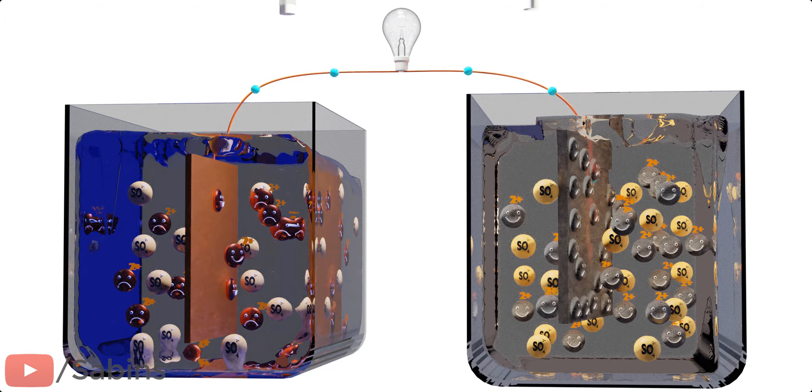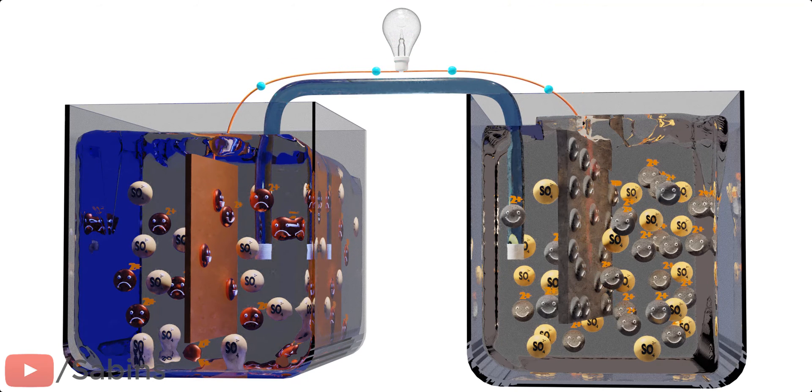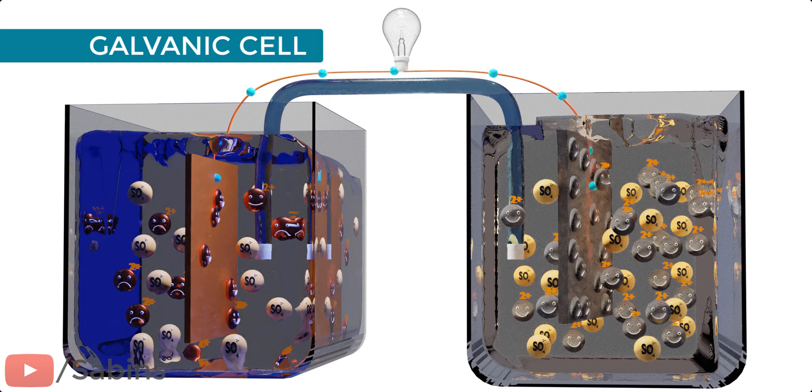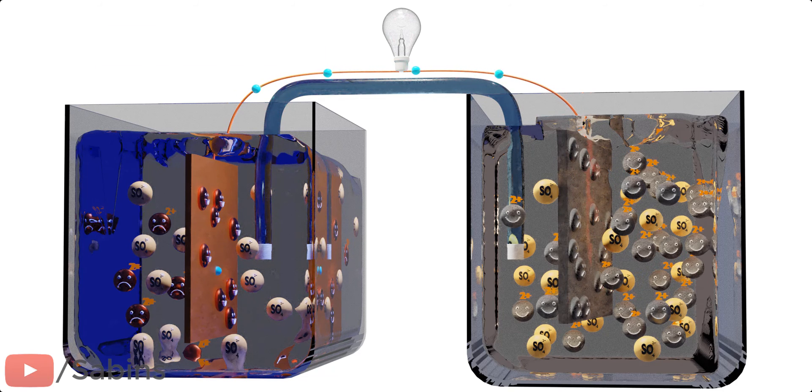To balance charge on both sides, a salt bridge is introduced. The cell we have just created is known as a galvanic cell. We hope you had an amazing journey, starting with the concept of electric potential and ending with how to produce voltage and current flow in a sustainable way.